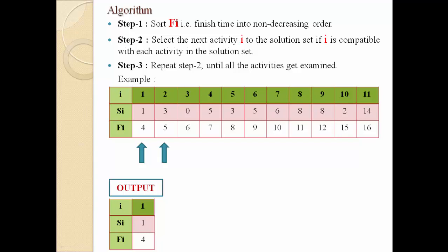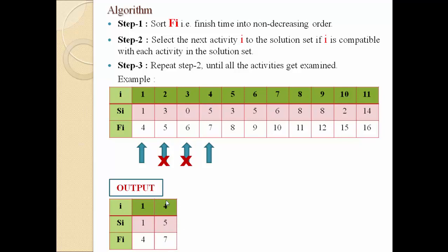Now examine activity 2 with starting time 3 and ending time 5. Since the previous activity ends at 4 and activity 2's starting time 3 is less than 4, it is not compatible. Activity 3 has starting time 0, also not compatible. Activity 4 has starting time 5, which is greater than or equal to 4 — so activity 4 is compatible. Select activity 4 (starting time 5, ending time 7) and add it to the solution set.